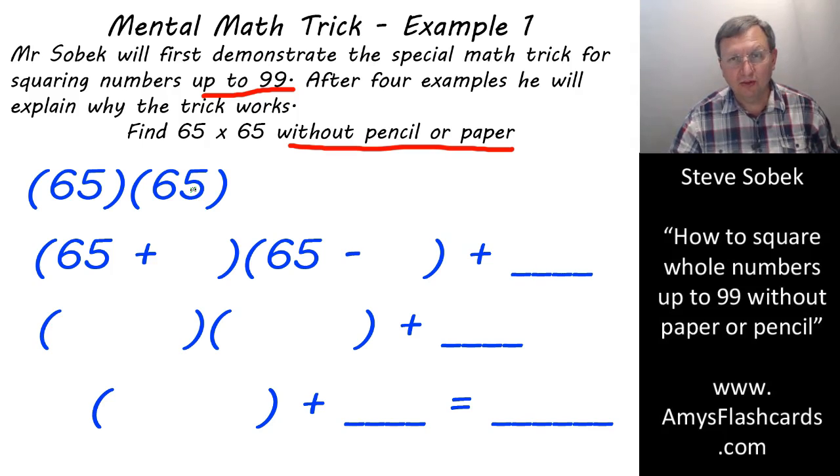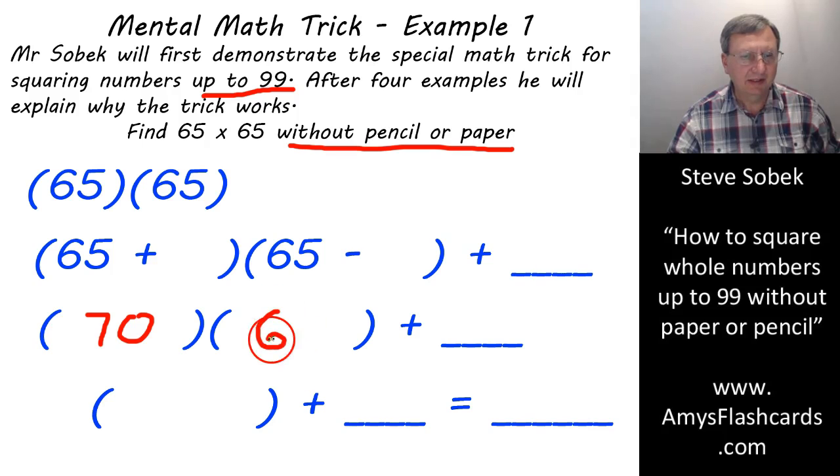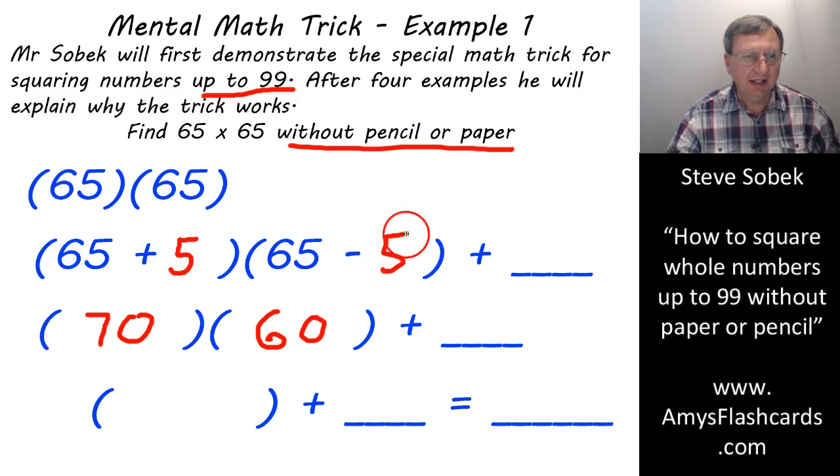But would you not agree that the average person, at least the person who has memorized multiplication tables, has already gone through the earlier drills on amysflashcards.com, could multiply these two numbers together: 70 times 60. You'd say, oh yeah, that's easy. That would be 4200. Well, that's exactly what we're going to do. We're going to take 65 and add a 5 to it, and we're going to take 65 and subtract a 5 from it.